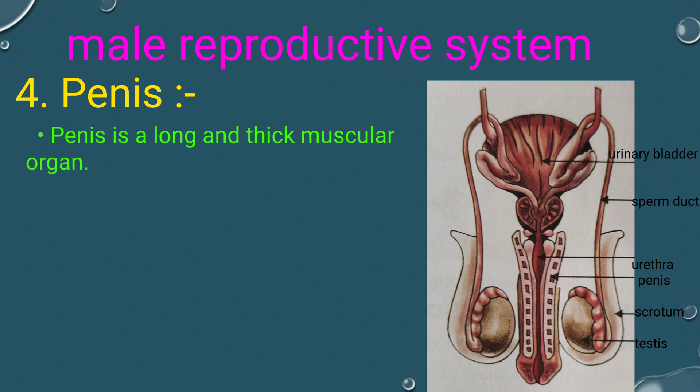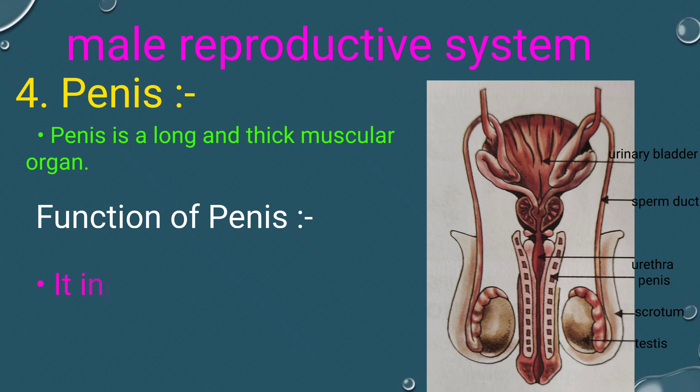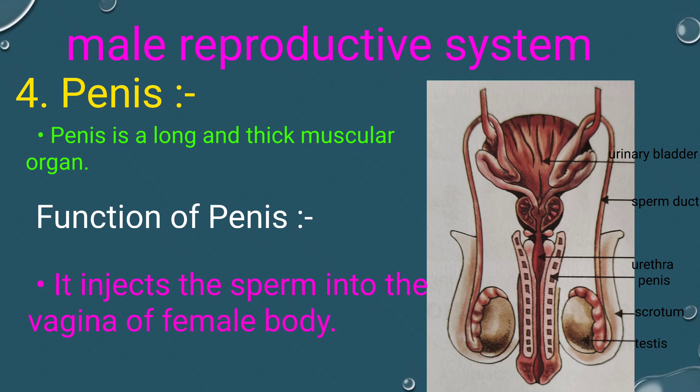Penis: The penis is a long and thick muscular organ. It injects the sperm into the vagina of the female body.